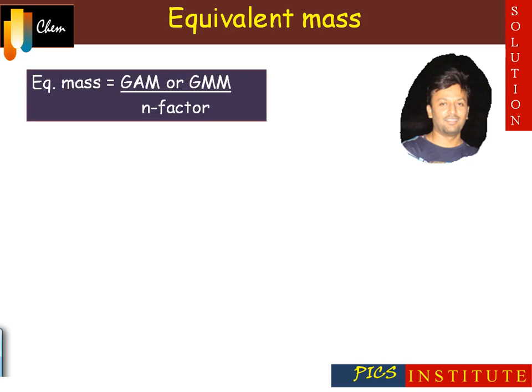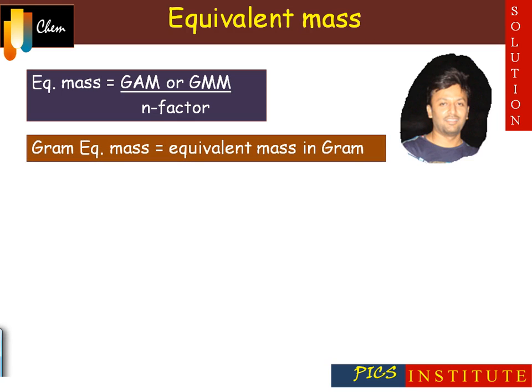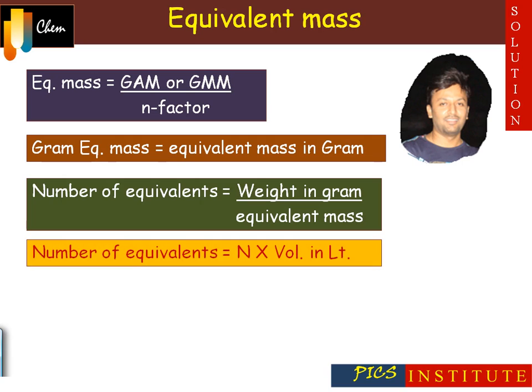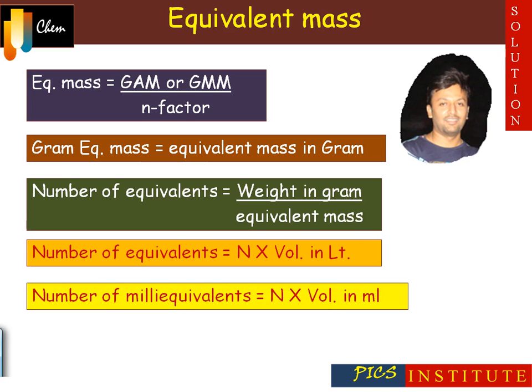So, equivalent mass is equal to gram atomic mass or gram molecular mass divided by n-factor. Gram equivalent mass is the equivalent mass expressed in grams. Number of equivalents is equal to weight in grams divided by equivalent mass. Number of equivalents is also equal to normality multiplied by volume in litres. Number of milliequivalents is equal to normality multiplied by volume in millilitres.